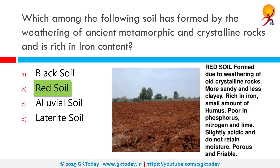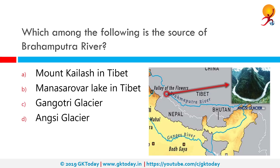Which among the following is the source of the Brahmaputra river? Looking at the map, the correct answer is the Angsi Glacier. The Brahmaputra originates from this glacier on the northern side of the Himalayas in Burang County, Tibet, as the Yarlung Tsangpo river. It flows south through Tibet, breaks through the Himalayas in great gorges, and enters India after taking a sharp turn at Namcha Barwa, flowing into Arunachal Pradesh where it is called the Dihang or Siang river.